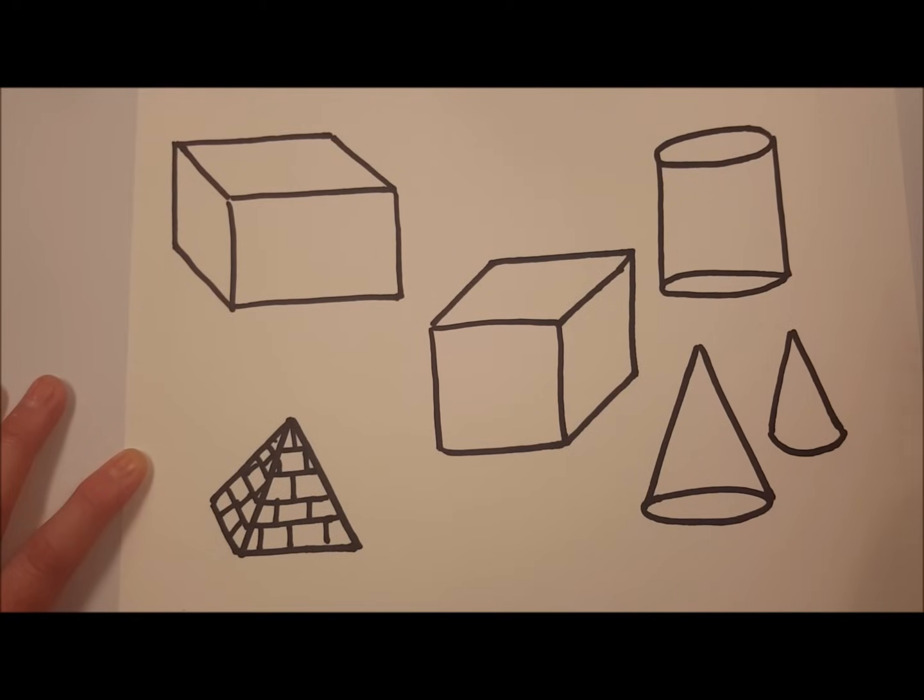If you were to do the cylinder solid, not transparent, you would draw two lines, the oval at the top, and just a curve at the bottom. All right, that's how you draw solid or three-dimensional shapes.